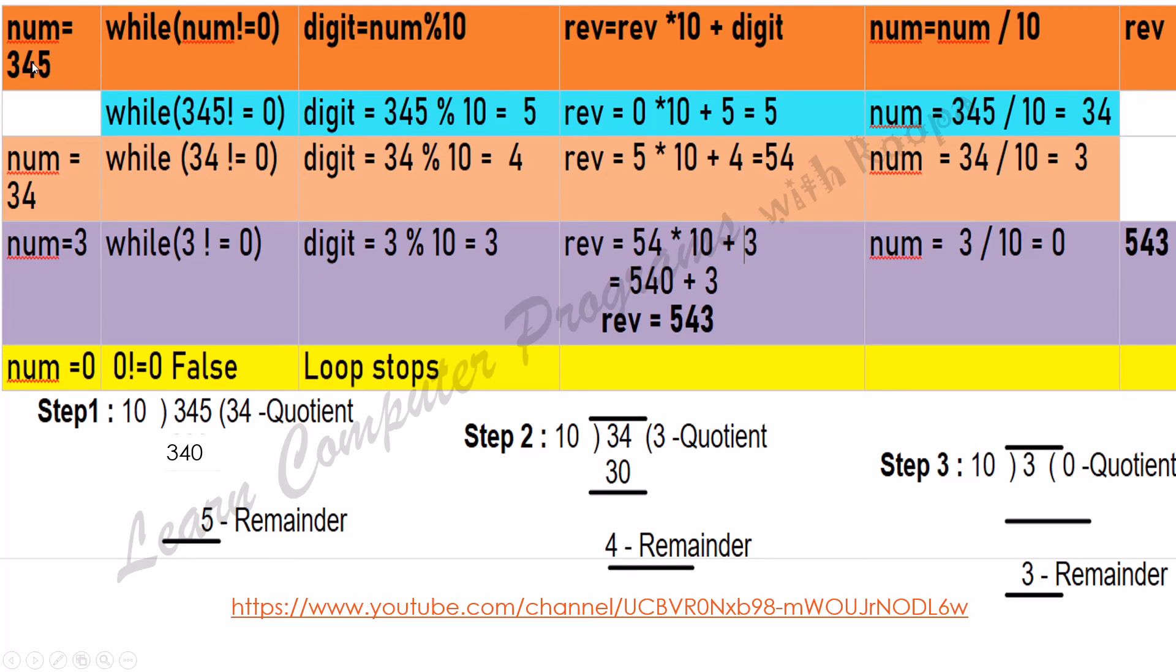So 345 has become 543. Now what happens to num? Num is 3 divided by 10—3 integer division by 10. That gives me 0 as the quotient.